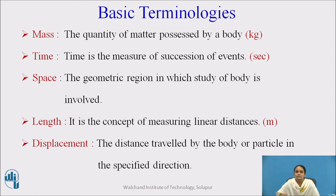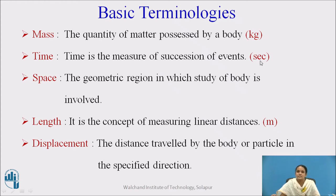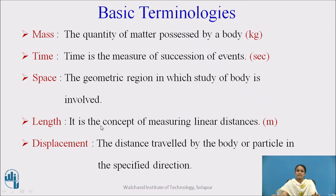These are the basic terms used in engineering mechanics. Mass is the quantity of matter possessed by a body; the SI unit of mass is kg. Time is the measure of succession of events; the SI unit of time is seconds. Space is the geometric region in which the study of a body is involved. Length is the concept of measuring linear distances, and the SI unit of length is meters.